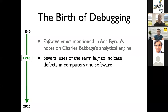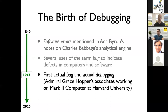In computers and software, the event happened that is what most people tend to associate with the term 'bug' — which is that the first actual bug and actual debugging, so removal of a bug, happened in the group of Admiral Grace Hopper.